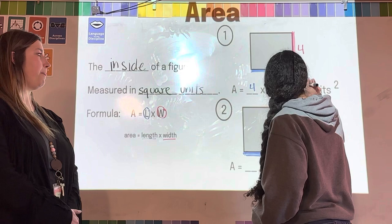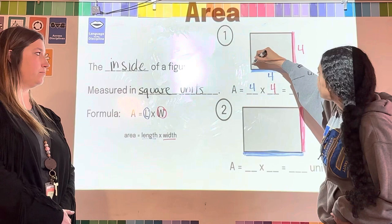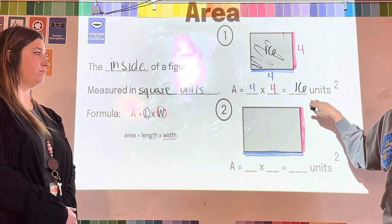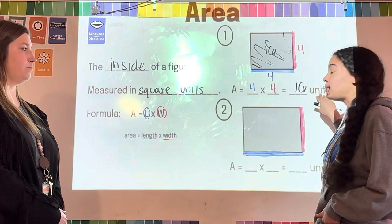16, and that gives me my area of this shape. So all of this in here is going to be 16 units squared. Whenever you're giving your answer of area, you have to make sure that you put whatever units it is.